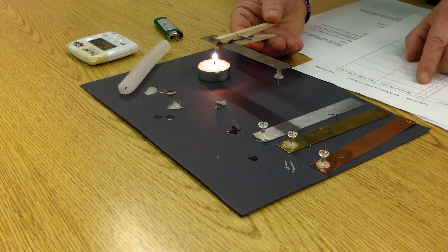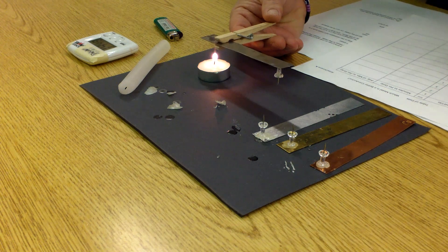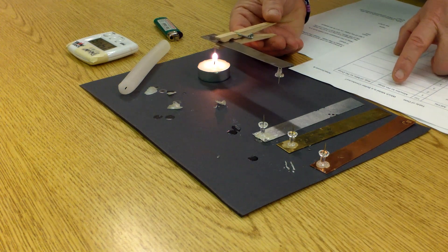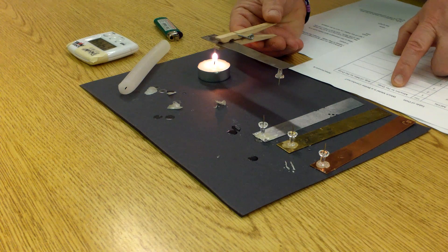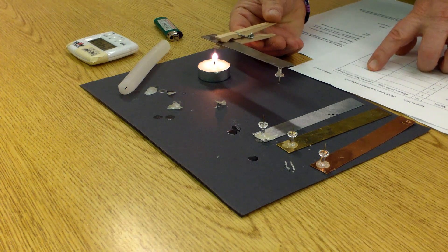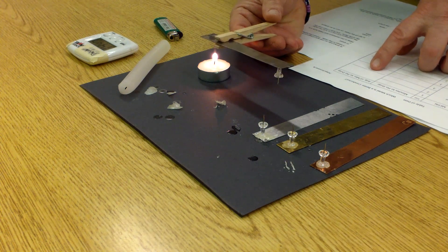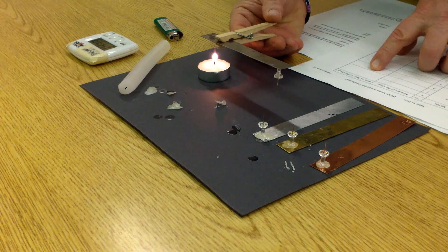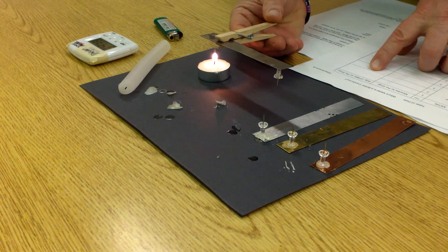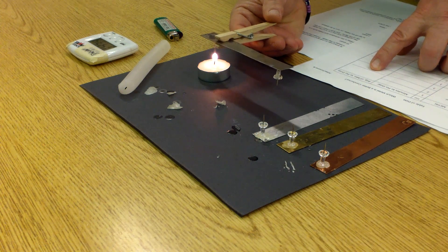There's three trials. That means you do it three times for each metal. And each time you write down how many minutes it takes for the pin to drop off. Average them. And that number in your average is going to be how far you're going to run your bar graph up the graph paper.